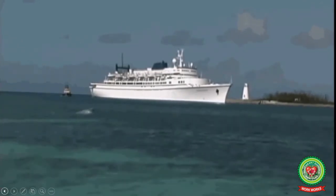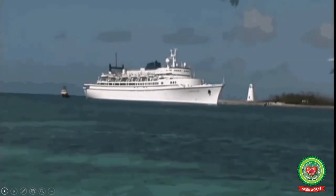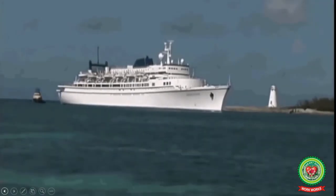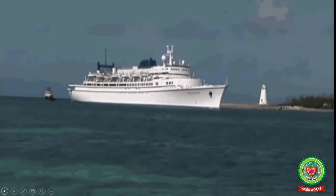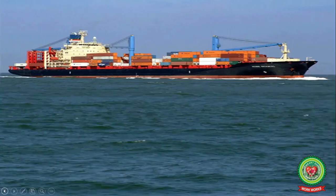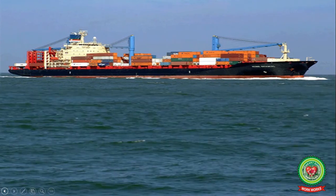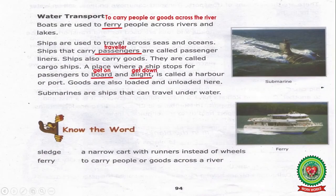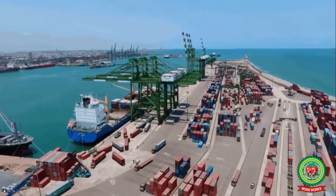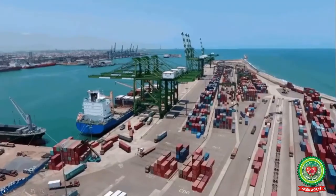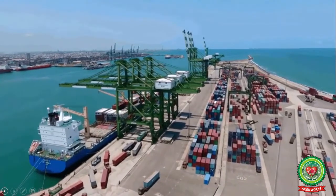A ship is a large vehicle used to travel on water — it is bigger than a boat. A passenger ship or passenger liner is a merchant ship whose primary function is to carry passengers. A cargo ship is a merchant ship that carries goods and materials from one port to another; cargo ships are also called container ships. A place where a ship stops for passengers to board and alight is called a harbour or port. Goods are also loaded and unloaded here. Underline the word 'board' and write down the meaning: get on. A place where passengers board and alight and where goods are loaded and unloaded is called a port.